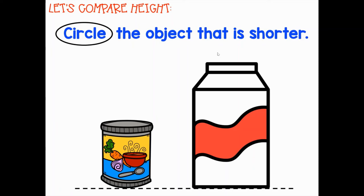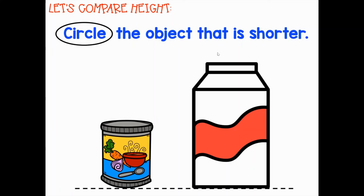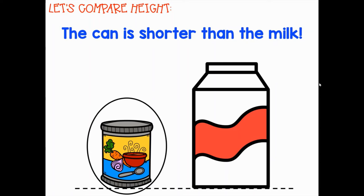Now we're going to compare the heights of objects. For this one, you're going to tell me which picture is shorter. This can of soup or this milk carton? I hope you said can of soup. Great job. The can of soup is shorter than the milk.